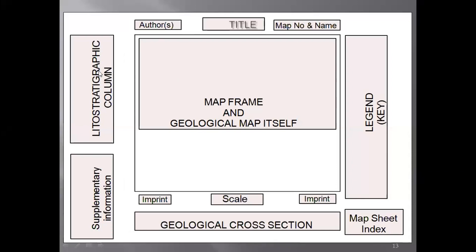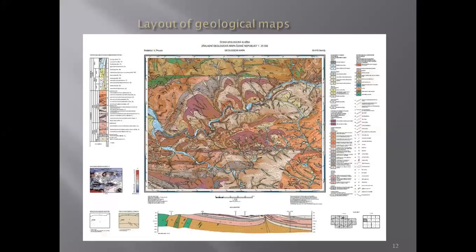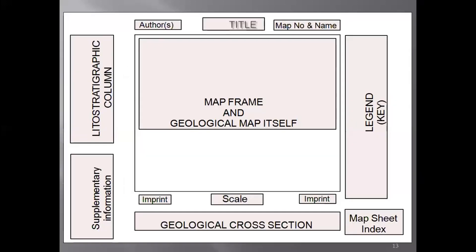The lithostratigraphy column is nothing else than the vertical relationship of rocks. You can see here various colors and various formations — they show the generalized stratigraphy column in order to represent how the facies look like, or how the rocks and groups of rocks look like vertically.